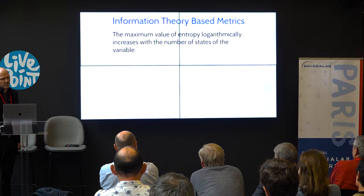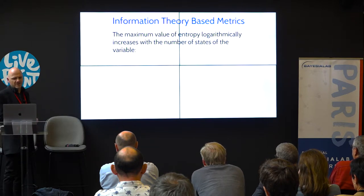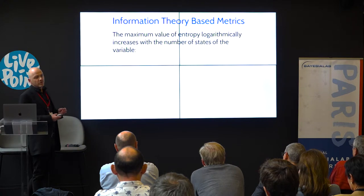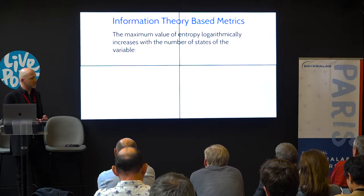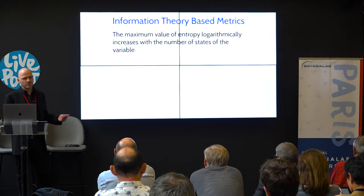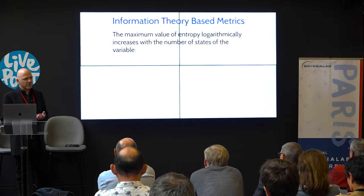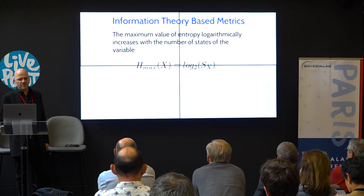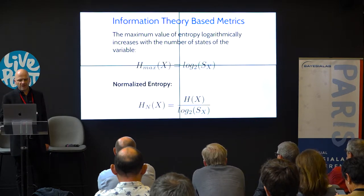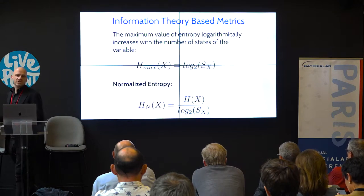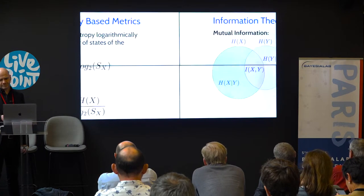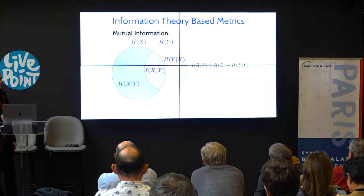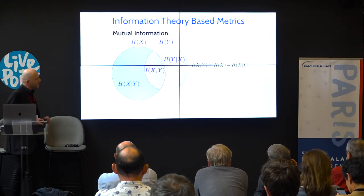The maximum value of entropy depends on the number of states of your variable. With two states, the maximum entropy is 1; with four states, it's 2; with eight, it's 3. So if you want to compare entropy across variables, we introduced normalized entropy — dividing entropy by the binary logarithm of Sx, where Sx is the number of states. This way, you can compare entropy values for variables that do not have the same number of states.